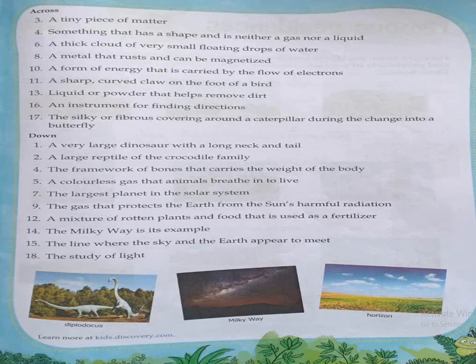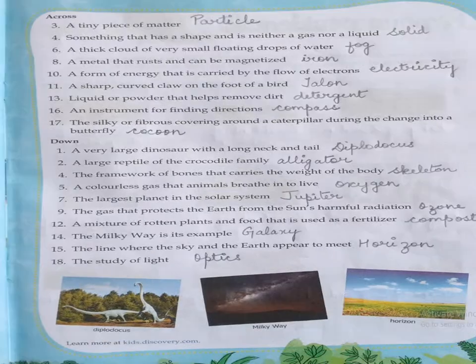The next clue is: a colorless gas that animals breathe in to live. Animals breathe this gas to survive — we breathe it too. That is oxygen. You can see the spellings of skeleton and oxygen here — write them correctly in your book.